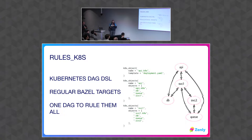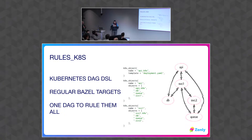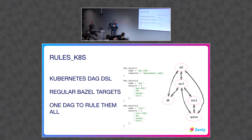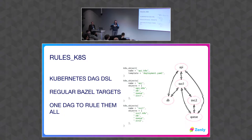We have a lot of backends at Zenly, and our whole production is running on Kubernetes. The problem is you get this dependency graph of services where the API depends on this service, which depends on the database, which also depends on this other service. You get into this weird, fuzzy situation where you don't really know, and you just apply everything in the hopes that it will work.